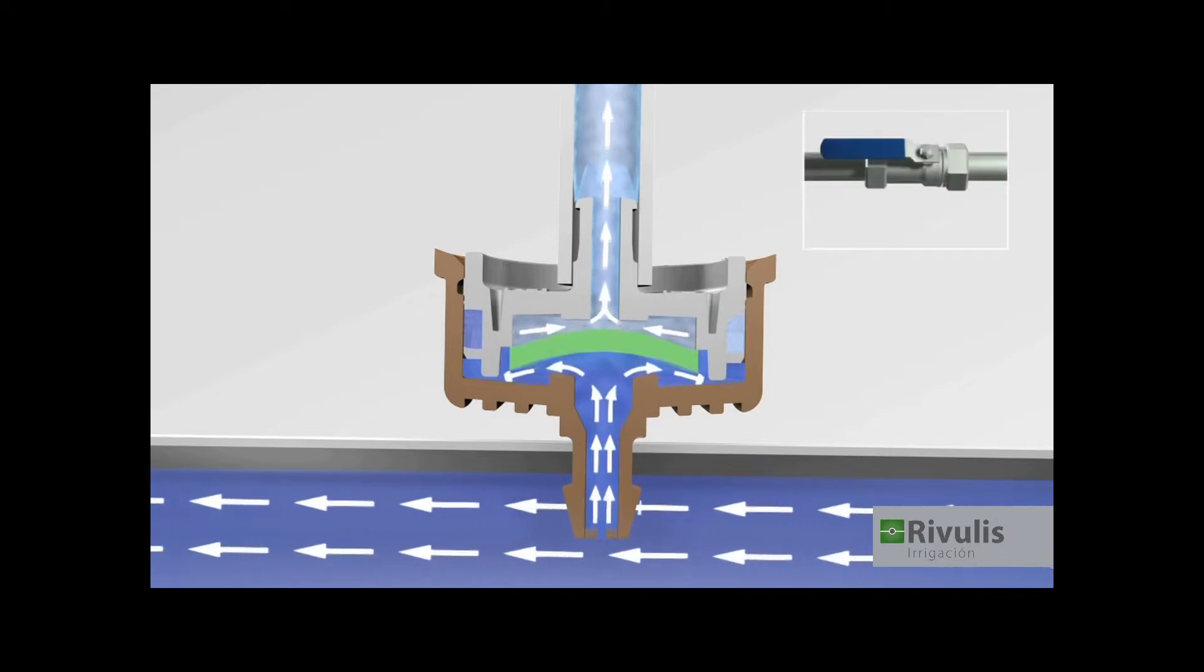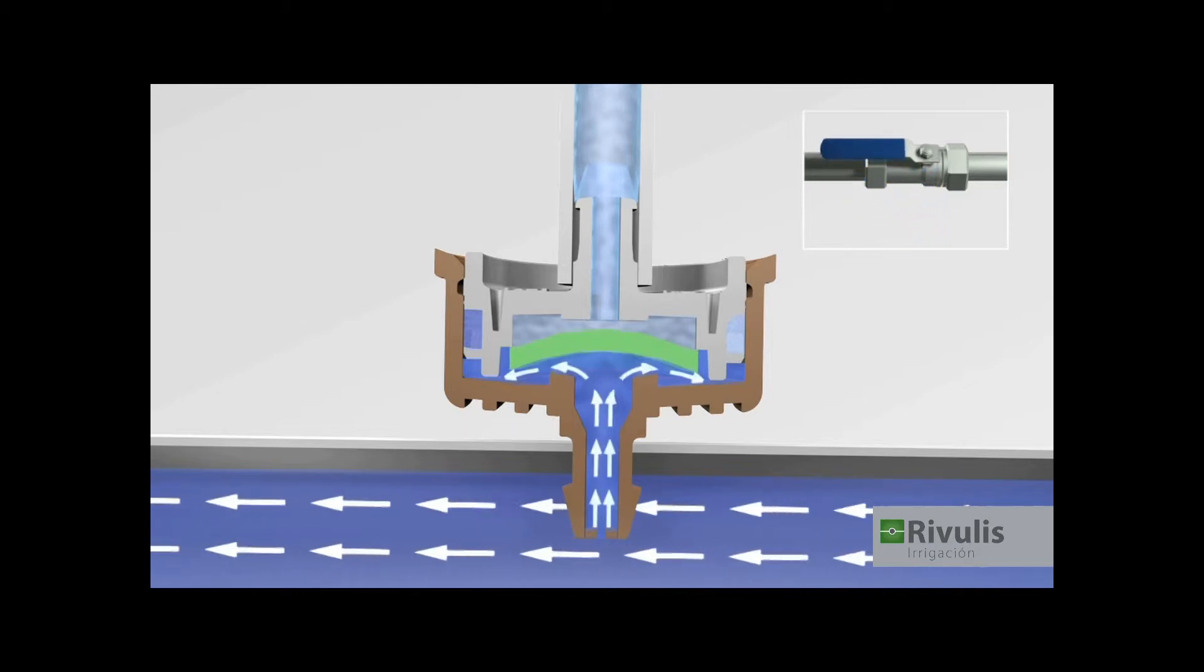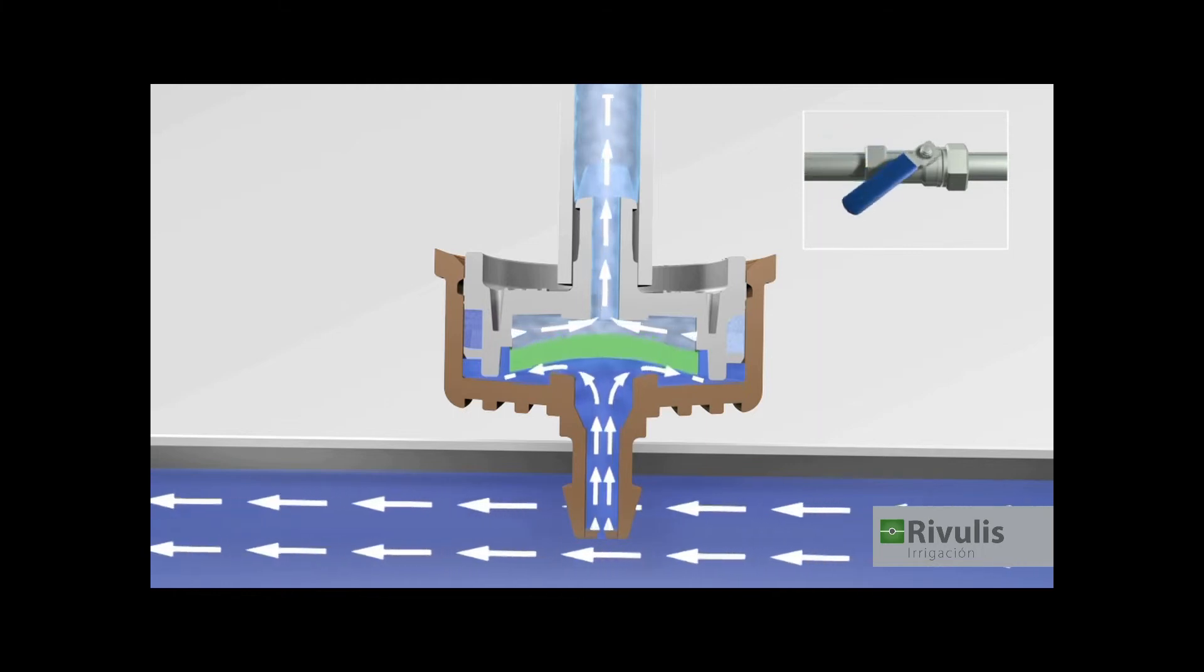Upon water shutoff, the membrane covers the sealing rim, preventing water drainage. When the water is turned back on, operation resumes immediately with no need for refilling.